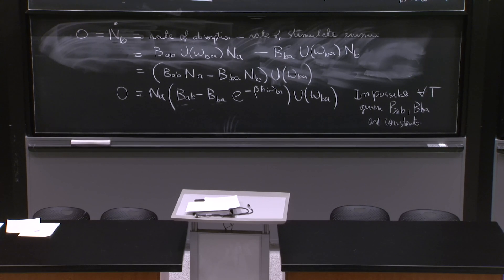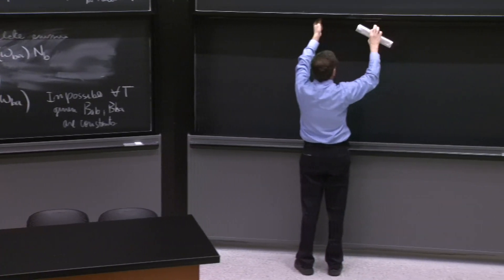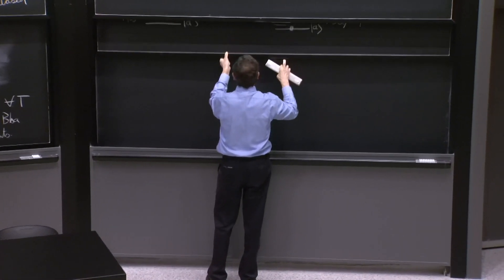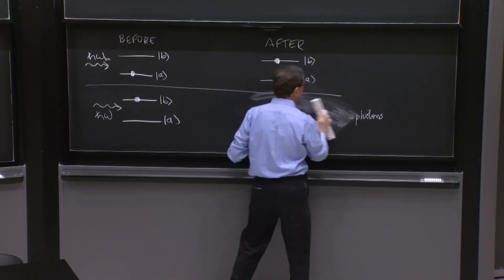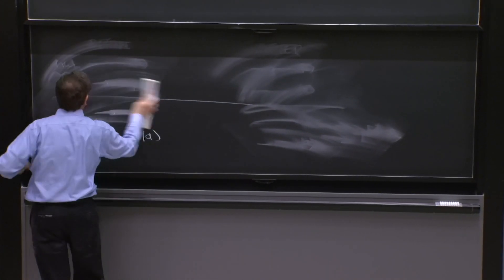So we're missing a process. This is the process that Einstein thought was intuitive, the process of spontaneous emission.